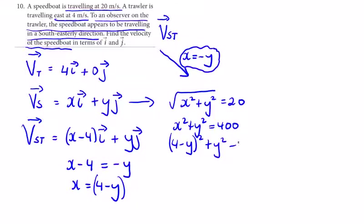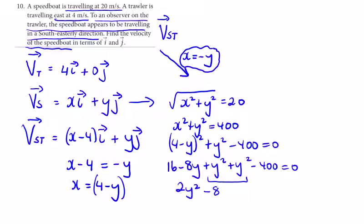Squared plus y squared, bring the 400 across and we simplify this and factorize it. 16 minus 8y plus y squared plus y squared minus 400 equals zero. So you could divide across by 2 now, but don't skip too many stages at one time because it is easy to make mistakes. So 2y squared minus 8y and then we have 16 away from the 400 to get 384, so minus 384 is equal to zero. Divided by 2, y squared minus 4y minus that's going to give me 192 equals zero.